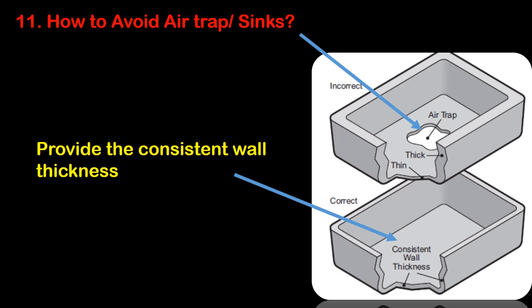Question number eleven: how to avoid air traps and sinks? To avoid air traps and sink marks, control similar thickness across the whole component. This will help the molten plastic to flow easily during the molding process.